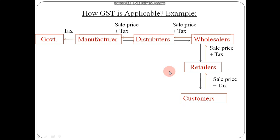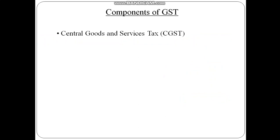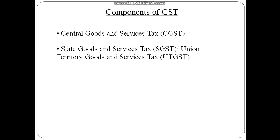The components of GST are: CGST (Central Goods and Services Tax), SGST (State Goods and Services Tax), UTGST (Union Territory Goods and Services Tax), and IGST (Integrated Goods and Services Tax). CGST is administered by the central government. SGST is administered by the state government, which makes rules and controls the tax. UTGST is administered by an administrator appointed by the central government for the union territory.